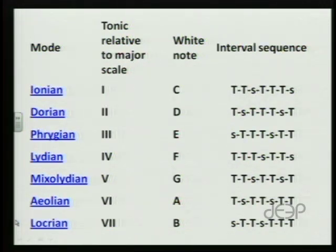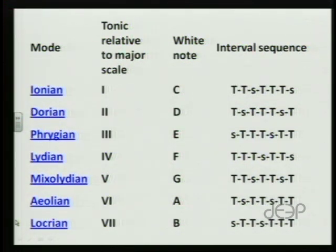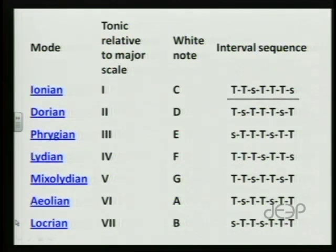The church modes are essentially a variety of variations on the major scale. If you look on your screen, you'll see that the Ionian mode starts on the first step of the major scale. Using just white keys, that would be C. The interval sequence, as we've always said with the major scale — whole, whole, half, whole, whole, whole, half — the T's represent whole steps, and the S's represent semitones or half steps. That's known as the Ionian mode, and we know that as the major scale.